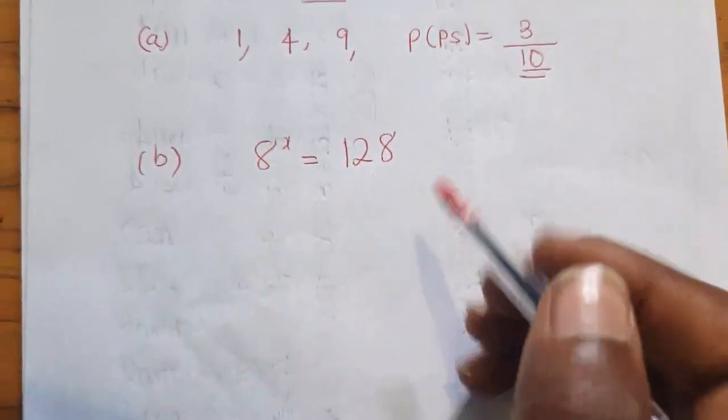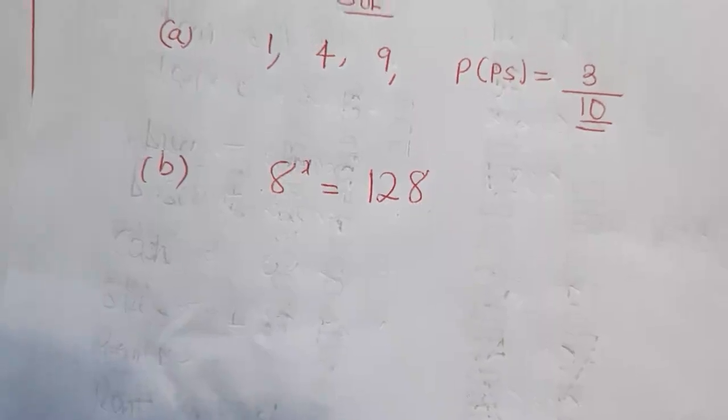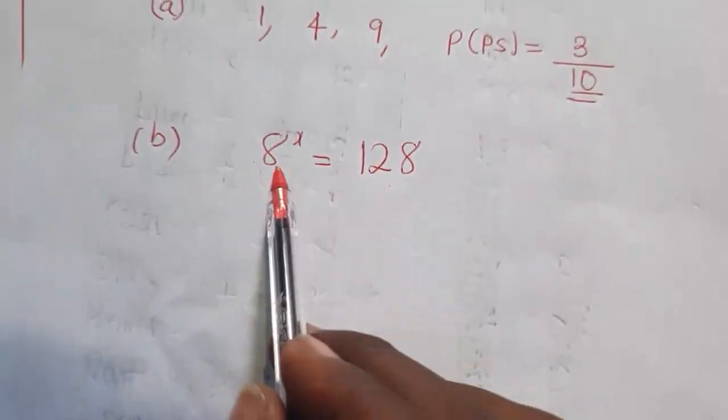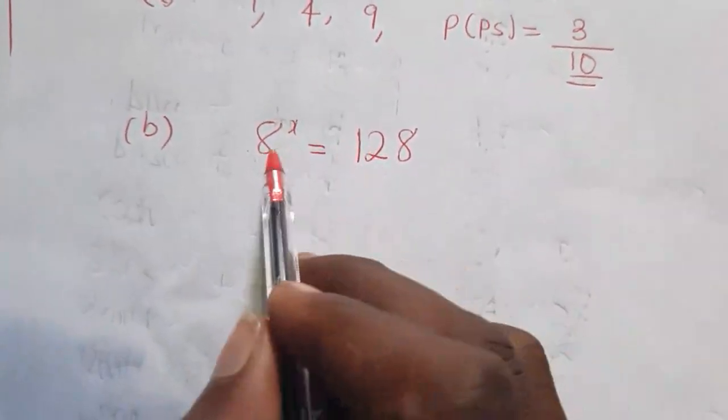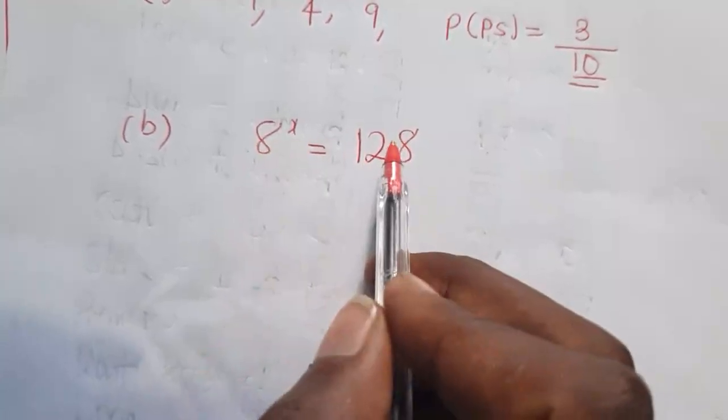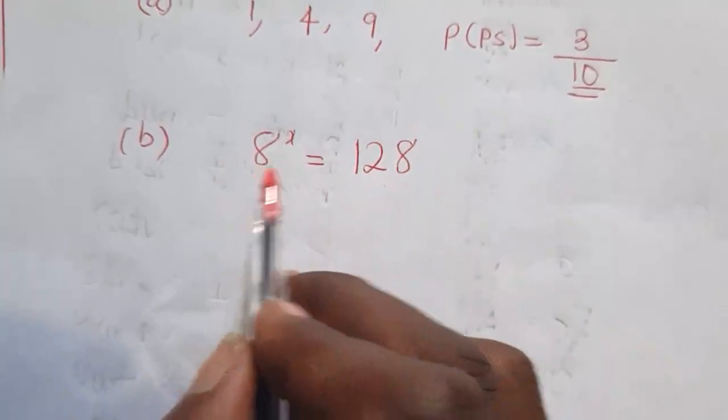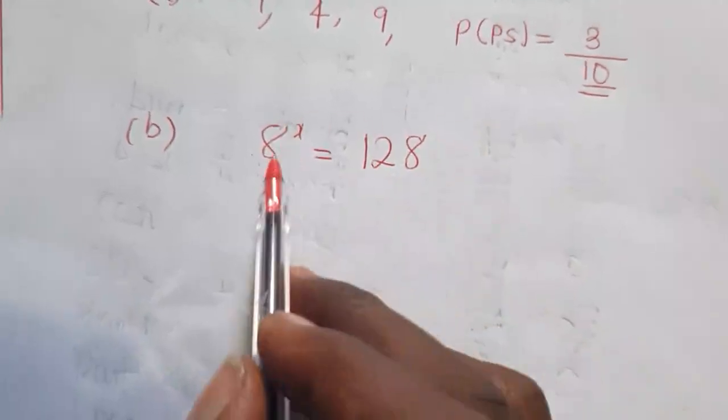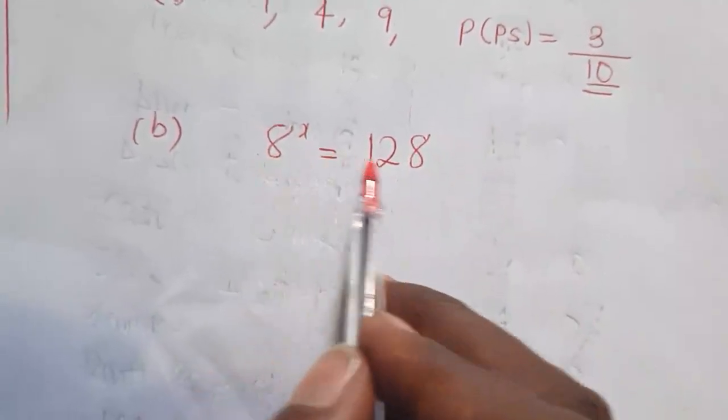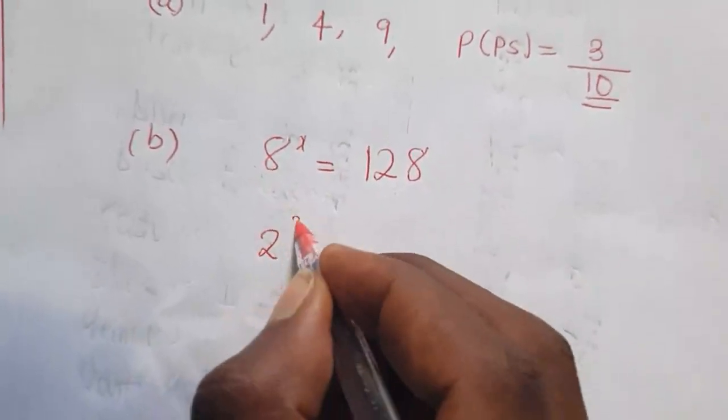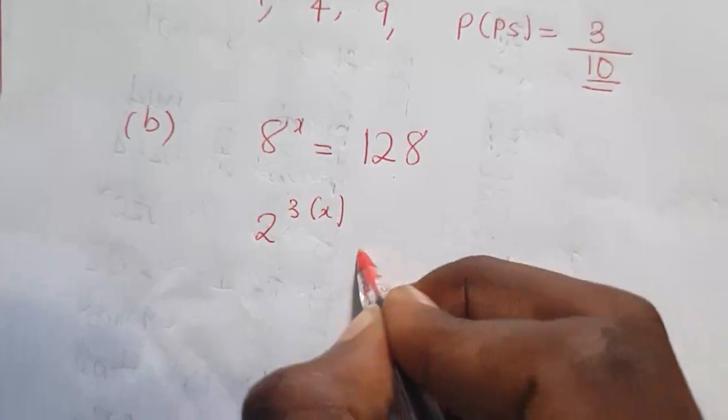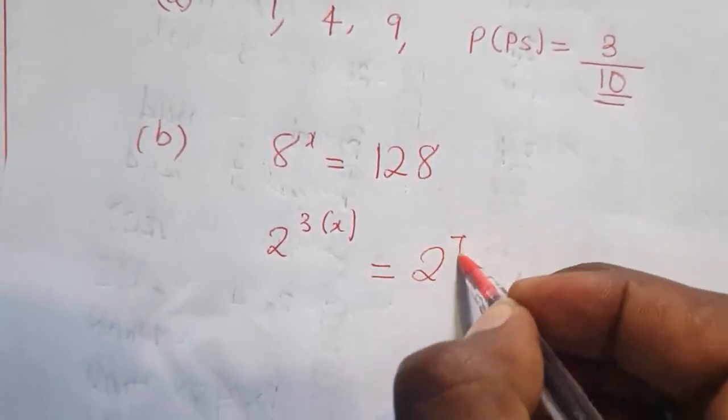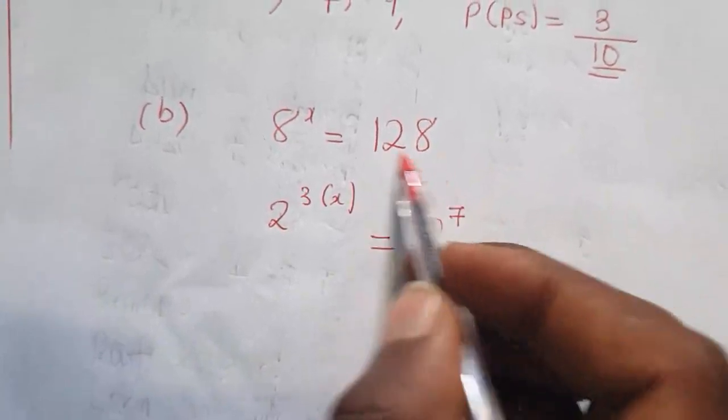So we discover that for us to have same bases, we must find the smallest possible base. Now we need to find a number that we can raise to the power to give us 128. In this case, we can break down the base here. We know that 2 to the power 3 is the same as 8, equal to 2 to the power 7 is the same as 128.